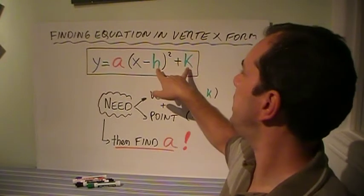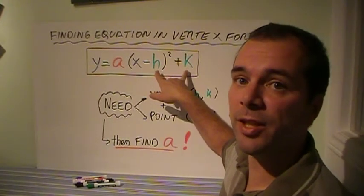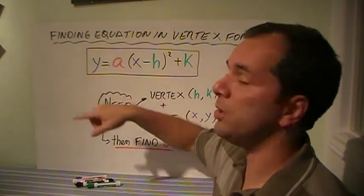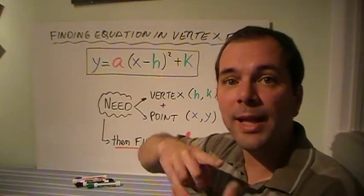Remember that in vertex form, that gives you the vertex, the h and the k. The a gives you the shape, and the x and the y would just be every point along that parabola.